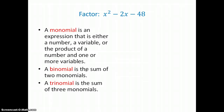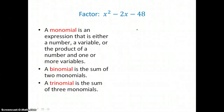We're going to factor the trinomial x squared minus 2x minus 48. This trinomial should factor into a binomial times a binomial, so we'll set up our parentheses. To factor this trinomial, we'll factor the first term first. Factors of x squared are x times x, and they go first in our binomials.